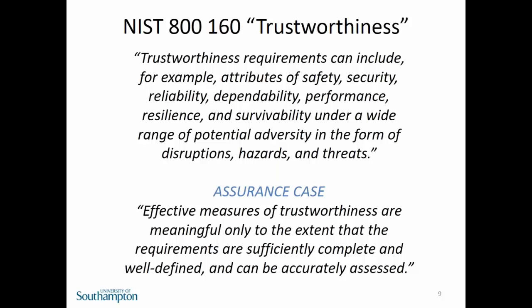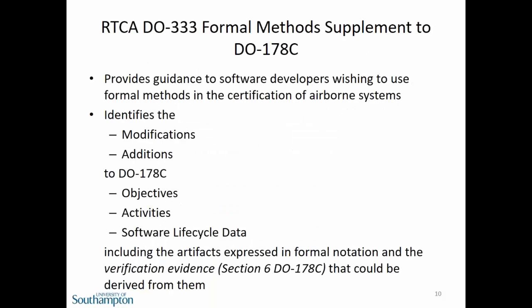NIST 800-160 defines security as freedom from conditions that can cause loss of assets — financial or lives — with unacceptable consequences. The system protection capability is a system control objective and a system design problem. NIST 800-160 also has this notion of trustworthiness: trustworthy requirements can include attributes of safety, security, reliability, dependability, performance, etc. It's a requirement of 800-160 to produce an assurance case, measuring trustworthiness — are the requirements sufficiently complete, well defined, and accurately assessable?